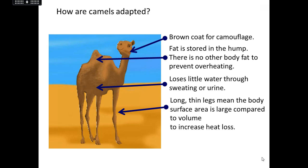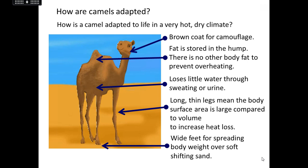Those long thin legs — opposite to the polar bear — mean the surface area is really big compared to a small volume. All the blood vessels going down those long legs and back up allow heat in the blood to be released into the environment through radiation, increasing heat loss and keeping the camel cool. Similarly to the polar bear, the camel also has wide feet in comparison to the size of its legs. This spreads its body weight over the sand so it won't sink in, and it can walk effectively with little effort. If it had really small hooves, it would sink into the sand, which moves around a lot, making walking very difficult.